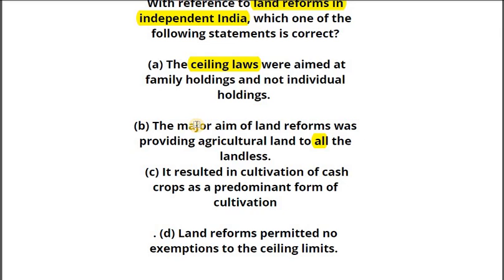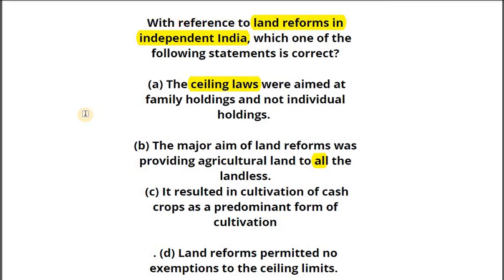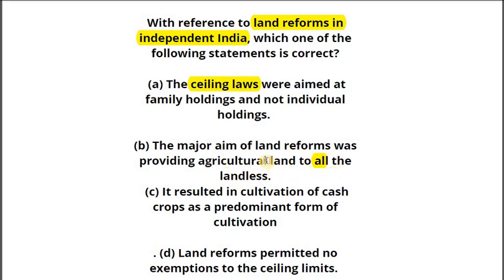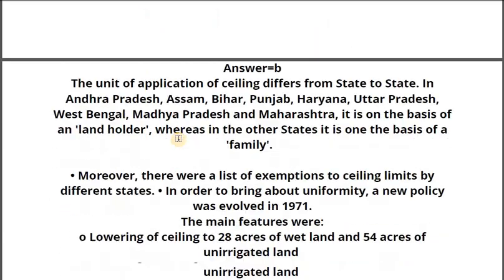What we've learned here is that even if some statements appear to be extreme, that does not mean they are incorrect. I believe that after the hype of elimination tricks post the 2016-17-18 exams, UPSC in 2019 intentionally used extreme statements that were actually correct. That's why I'm not in favor of these elimination tricks — rely on common sense and knowledge instead. The answer is confirmed: the major aim of land reforms was providing agricultural land to all the landless, because statement A is not correct.